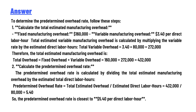Therefore, total estimated manufacturing overhead equals fixed overhead plus variable overhead: $160,000 + $272,000 = $432,000. Step two: the predetermined overhead rate is calculated by dividing the total estimated manufacturing overhead by the estimated total direct labor hours: $432,000 ÷ 80,000 = $5.40. So the predetermined overhead rate is closest to $5.40 per direct labor hour — that is the correct answer.